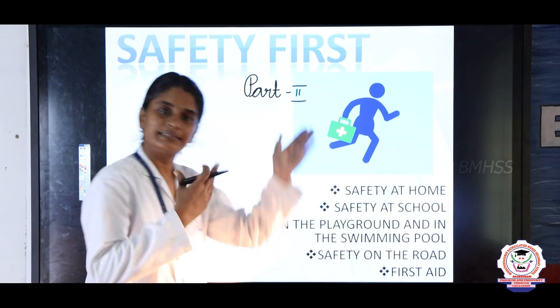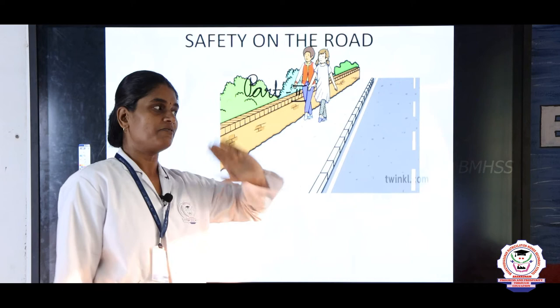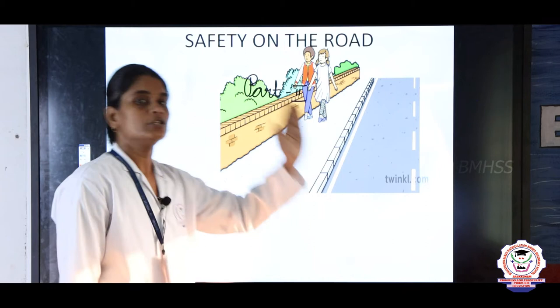Now we are going to see the second part, the continuation of your fifth lesson. We are going to see what are the safety rules that we must follow on the road. We usually travel from home to school and school to home through the road, so we need to know these safety rules.